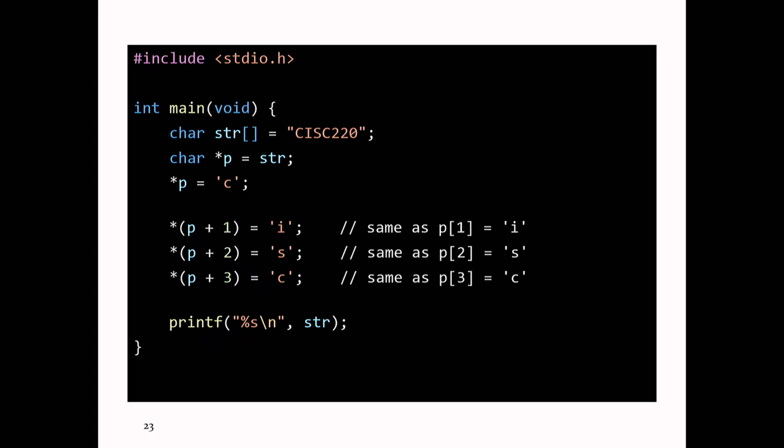So every proper C string is supposed to look like that. There's nothing stopping you from making an array of characters of length 7 and not putting in the null terminator. If you try to use that array and pass it to one of the functions that expect a standard C string, you'll probably end up with some sort of error because the null terminator is missing.